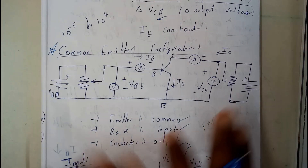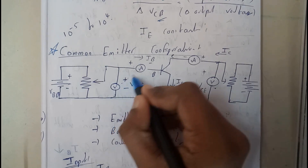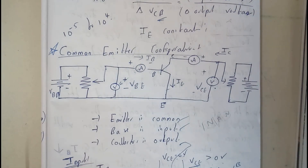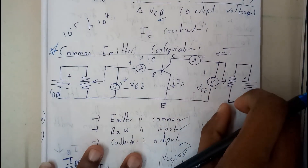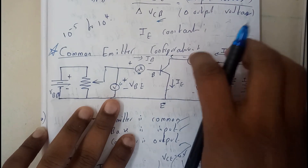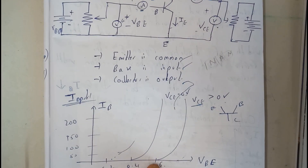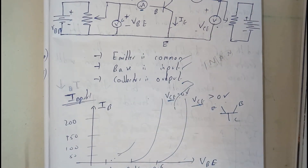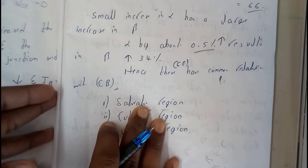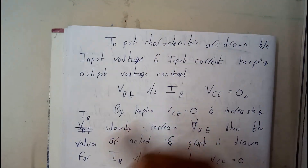When drawing the input characteristics, you take the output voltage as constant and draw the graph between the input voltage and input current. Similarly, when drawing the output characteristics, you take the input current as constant and draw the graph for those two. Input characteristics are drawn between input voltage and input current keeping the output voltage constant.